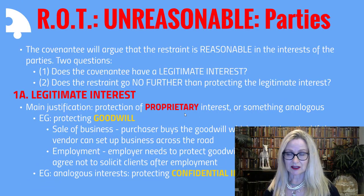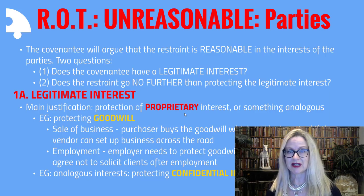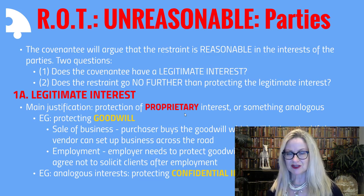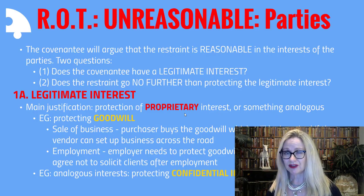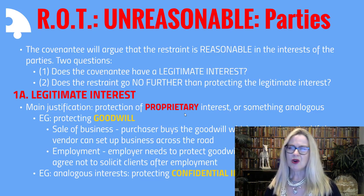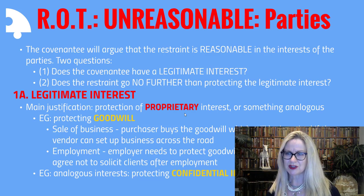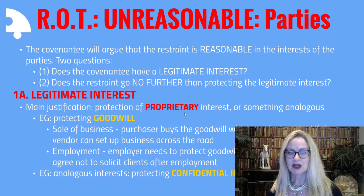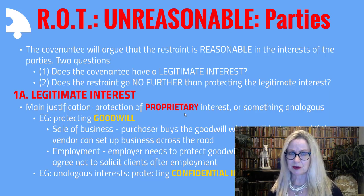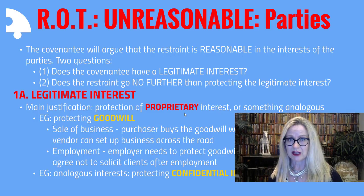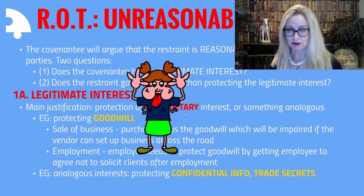Let's unpack the process. The first hurdle is to prove that the restraint is reasonable as between the parties involved. The two big questions are whether the covenantee has a legitimate interest, and whether the restraint goes no further than protecting that legitimate interest. The main form of legitimate interest is protection of a proprietary interest or something analogous to it — for example, protecting goodwill. This is common in sales of business, where the purchaser buys the goodwill, which would be impaired if the vendor could then go and set up business right across the road.